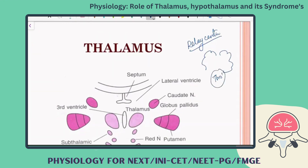Whether it is the dorsal column pathway, spinothalamic pathway, trigeminal pathway, visual sensation, olfactory sensation, auditory sensation, or taste sensation — all sensations have their higher center in the brain, but none will reach the cortex without first reaching the thalamus. The thalamus analyzes and decides whether to relay the information to the cortex or not, which is why it is called the relay center.